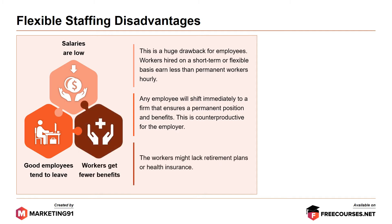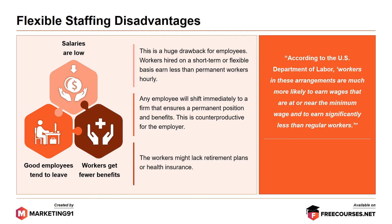Next, workers get fewer benefits. The workers might lack retirement plans or health insurance. According to the US Department of Labor, workers in these arrangements are much more likely to earn wages at or near the minimum wage and to earn significantly less than regular workers. As a result, many of these workers are working at or near poverty level.